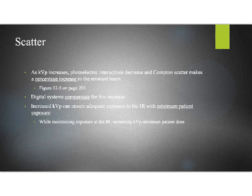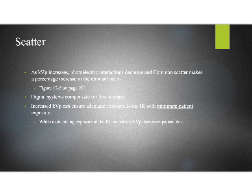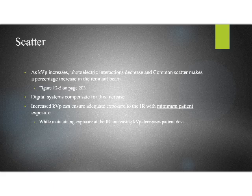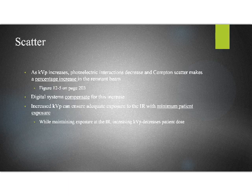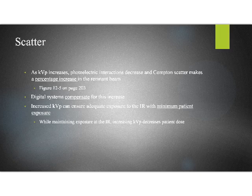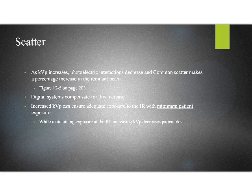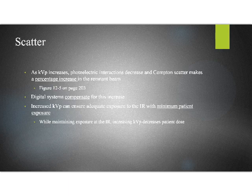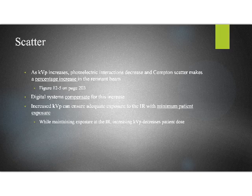So what we find, if we go back in our textbook to chapter 12, like on page 203, you will see that as we increase KVP, photoelectric interactions decrease as a percentage of the remnant beam and Compton effect remains stable. So the overall percentage of the remnant beam is now scatter. As I increase my KVP, I am increasing the amount of scatter that's present in the remnant beam. I'm increasing noise. And I like that figure 12-5 on page 203 for showing graphically what that looks like.